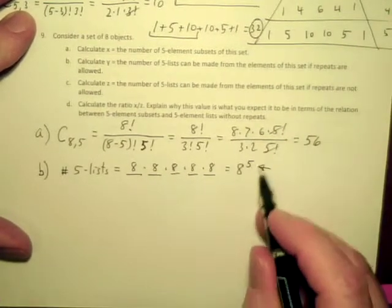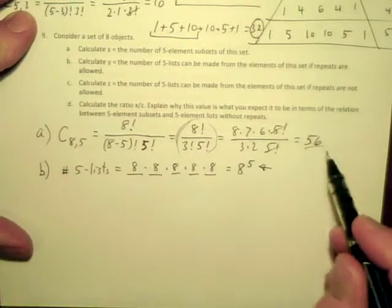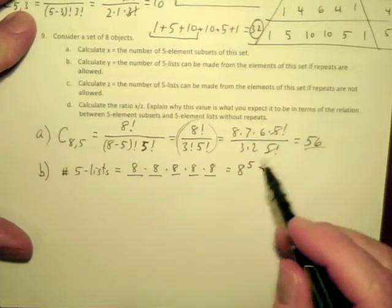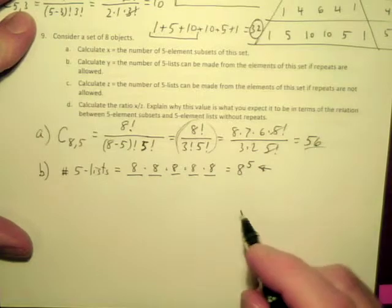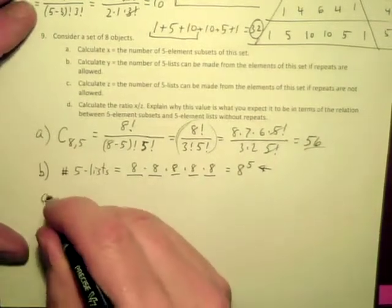In general, I'm happy if you just leave it like this. I want you to go ahead and cancel the factorials, but if it's 8 to the 5th or something like that, there's no reason to calculate it all out.